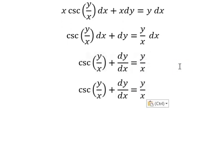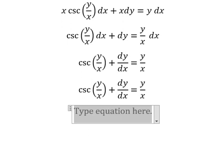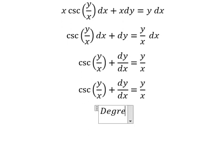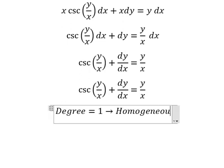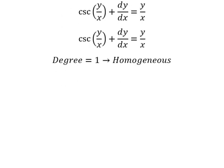Next we have y over x, y over x. This is about the read number one. So this is about homogeneous. And now I will put y equals to vx.